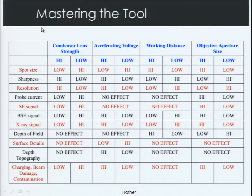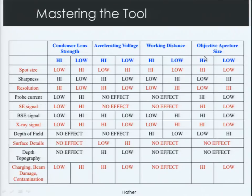This chart is for mastering the tool — it considers all your options and the effects on different signals or types of information you're trying to gather. It breaks down what happens if you change the strength of your condenser lens, the accelerating voltage, your working distance, or your objective aperture size, and how all these variables affect spot size, secondary electron signal, resolution, depth of field, and topography. These are all things a well-practiced user has to think about when investigating a sample with an FESEM.